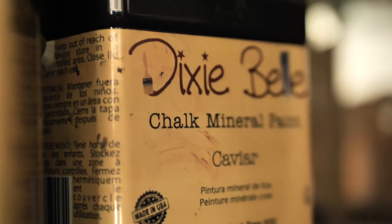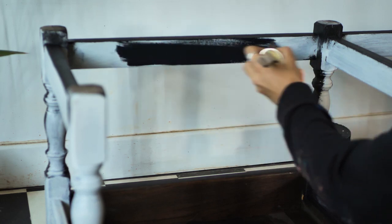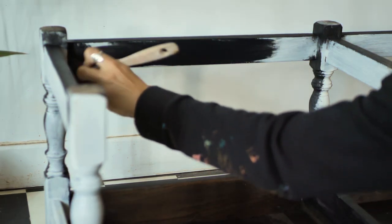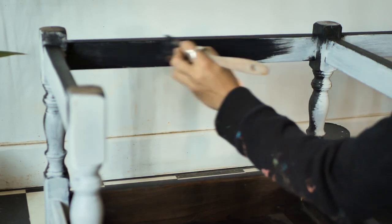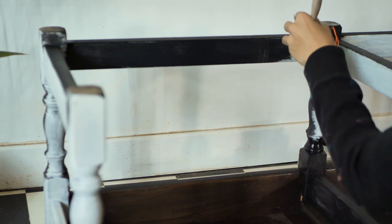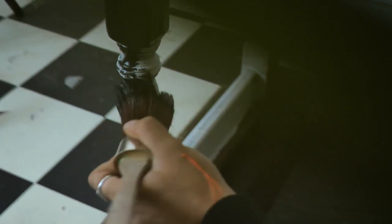Now let's paint the legs in black using Caviar from Dixie Bell paint and synthetic brush. I just took a small amount of paint, so I won't create brush strokes and maybe drips coming out of those details. I double check for the drips when I'm done with the first coat, but just picking up little paint will make it safer.